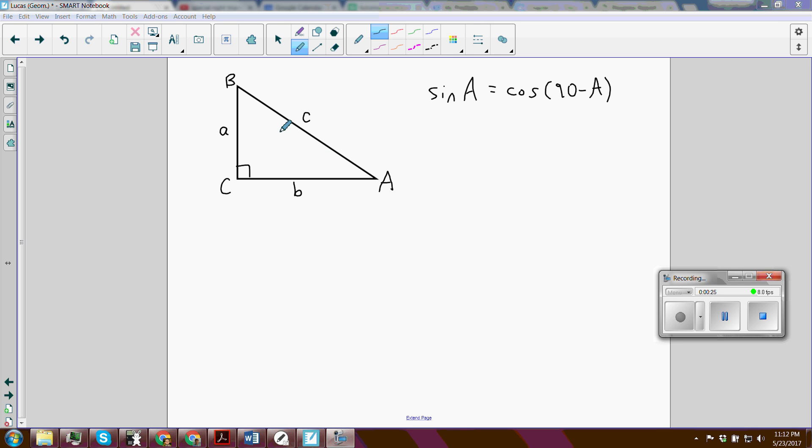So angle A and angle B together add to 90 degrees. So then 90 minus A would be... So the sine of A is equal to the cosine of, well, 90 minus A - we just figured that out - is B.